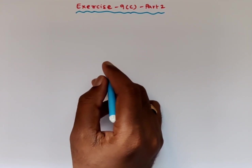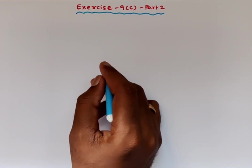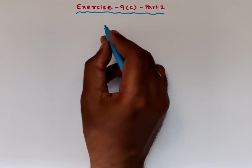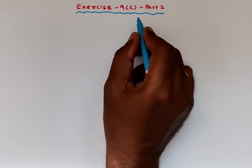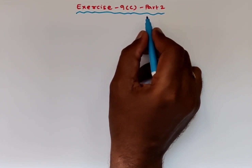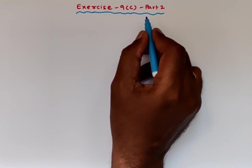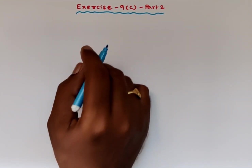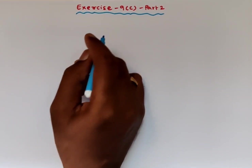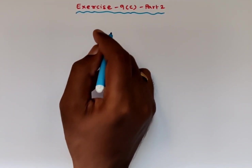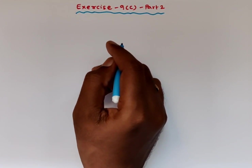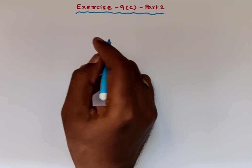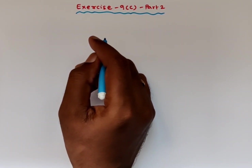Dear students, in this lecture we will continue the problems of exercise 9c. This is the continuation of the previous lecture, up to the 5th problem we did previously. Now we will solve from the 6th problem, Roman numeral 2.